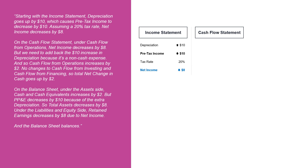On the cash flow statement, under cash flow from operations, net income decreases by eight, but we need to add back the ten dollar increase in depreciation because it's a non-cash expense. So cash flow from operations increases by two. There are no changes to cash flow from investing or financing, so the total net change in cash goes up by two.